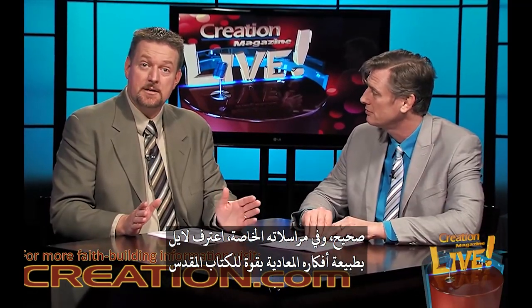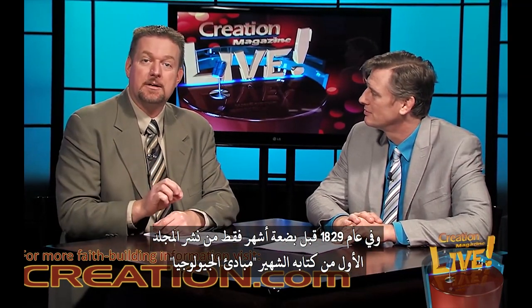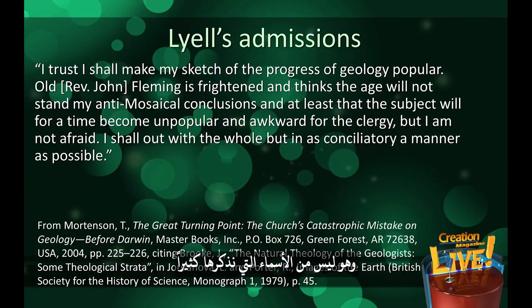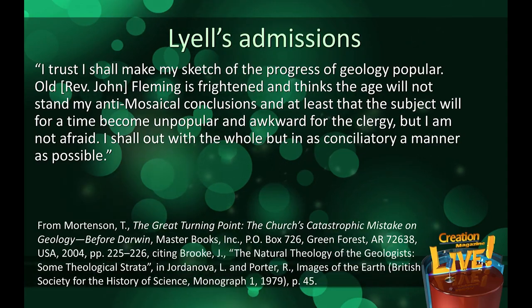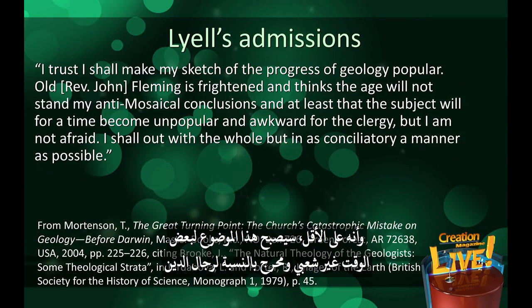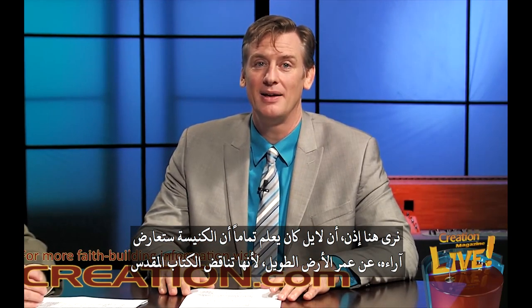In his private correspondence, Lyell admitted to the strongly anti-biblical nature of his ideas — he calls them 'anti-mosaical,' referring to the books of Moses, which includes Genesis. In 1829, just a few months prior to the publication of his Principles of Geology, Lyell wrote to fellow Old Earth geologist Roderick Murchison: 'I trust I shall make my sketch of the progress of geology popular. Old Fleming is frightened and thinks the age will not stand my anti-mosaical conclusions, and at least that the subject will for a time become unpopular and awkward for the clergy. But I am not afraid. I shall outwit the whole, but in as conciliatory a manner as possible.' Lyell knew full well that the Church would object to his long-age views because they contradicted the Bible, but he was confident he could sway people.